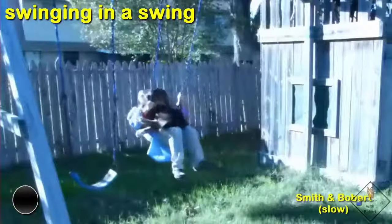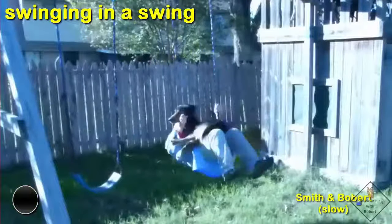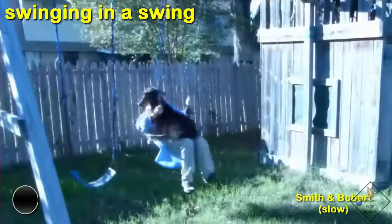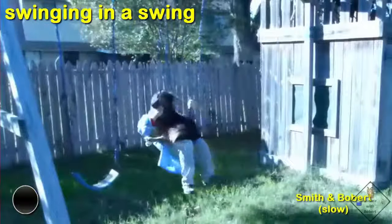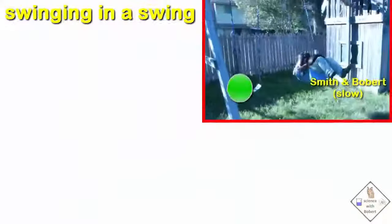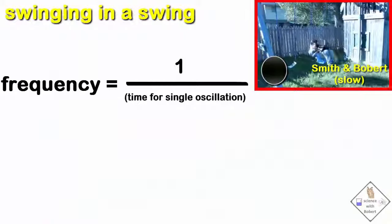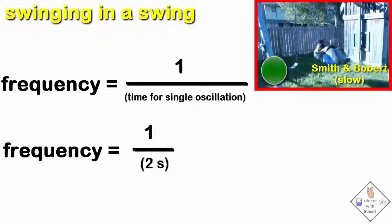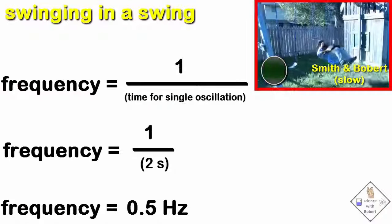Dr. Smith and I like to swing. Every time we are facing forward and at our maximum height, the green light flashes. The light flashes once every two seconds. So our frequency, which equals one divided by the time for one complete oscillation, is 0.5 Hertz.